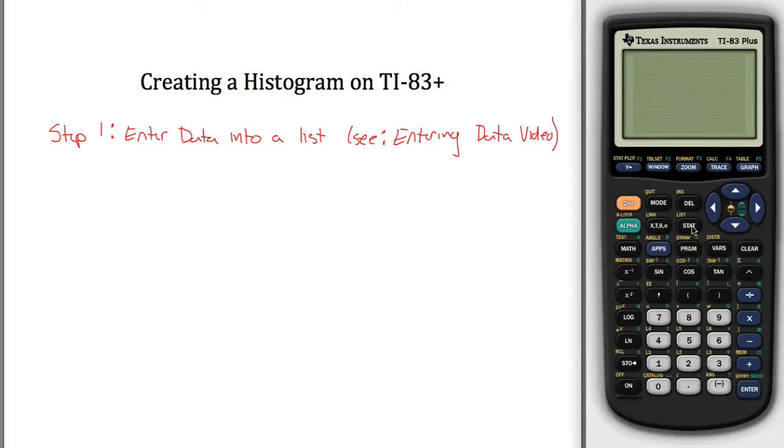The gist of it is hit stat, go into edit, and put in all your values. I already put in all my values here in L1. It's supposed to be a bunch of GPAs, so I have 18 observations of various grade point averages between 0 and 4. Just picked some numbers at random.